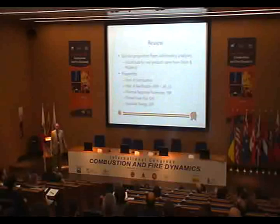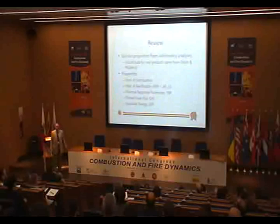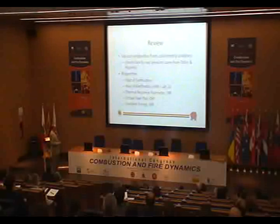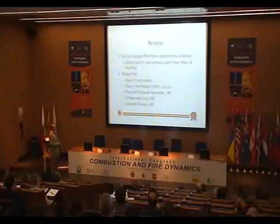Here are the properties you can measure by devices like the cone calorimeter: heat of combustion, or you can get heat of gasification. You can take the ratio — HRP, TRP. You can unravel this into thermal conductivity, density, specific heat, and ignition temperature. This is critical heat flux and total energy.